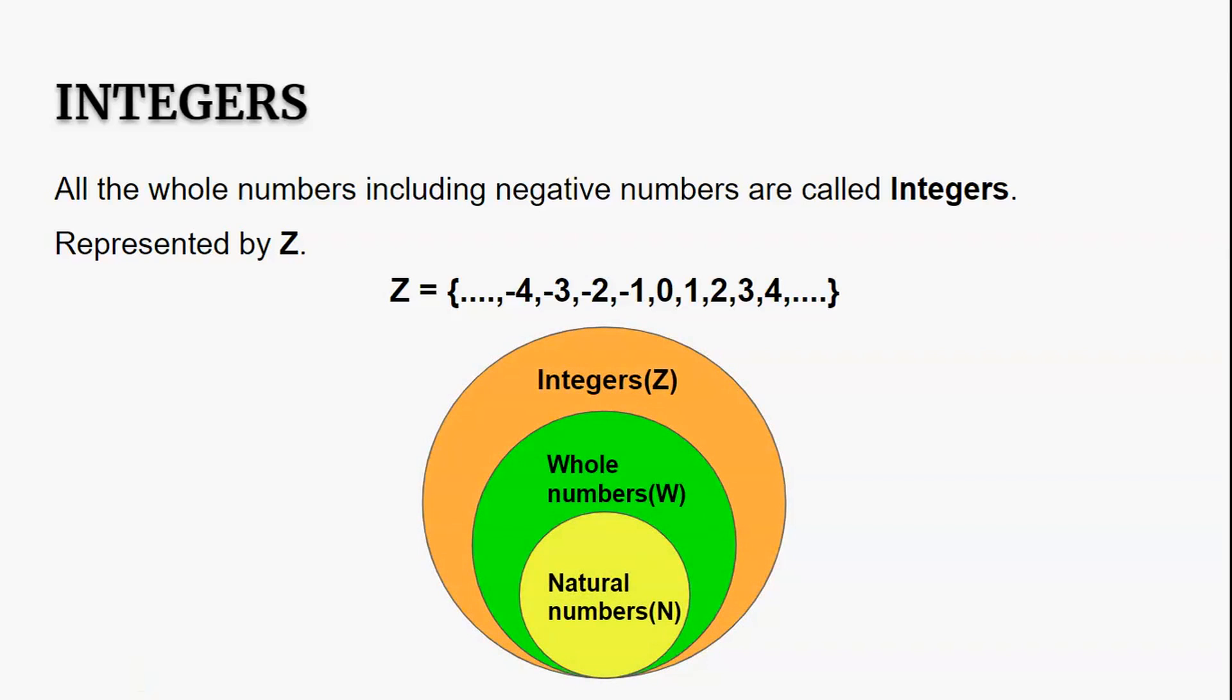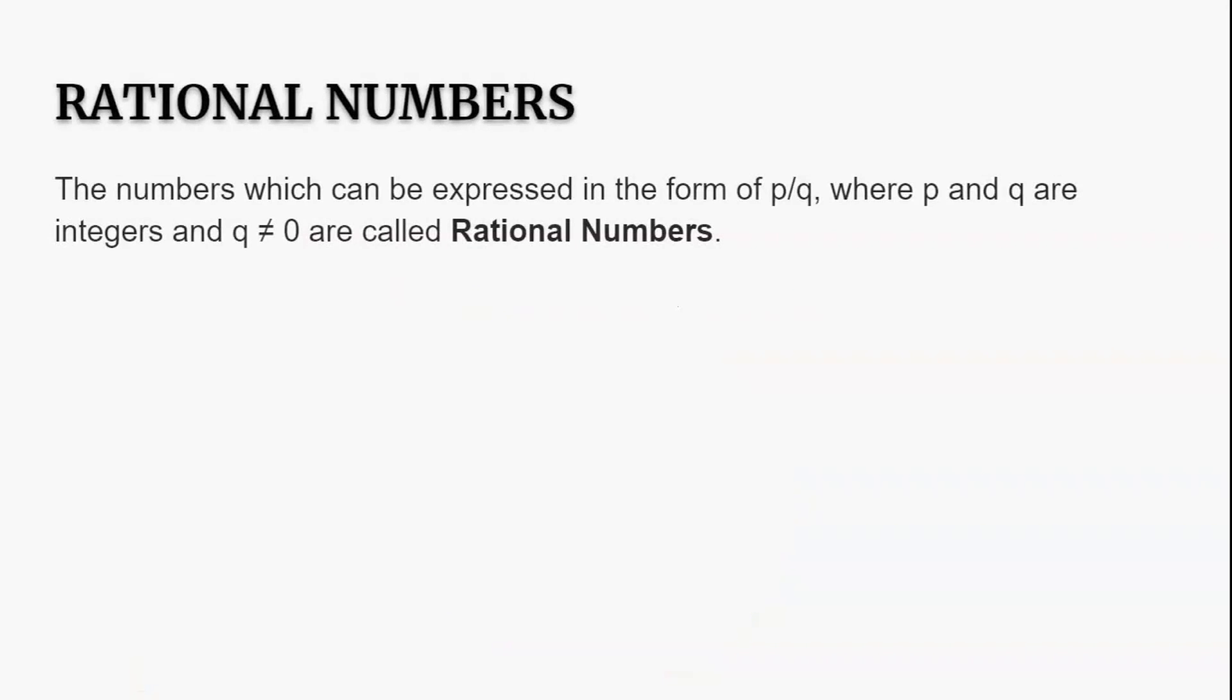Now here comes rational numbers. All the numbers which can be expressed in the form of p/q where p and q are integers and q not equal to 0 are called rational numbers. They are represented by capital Q.